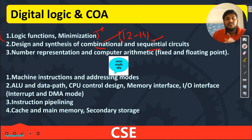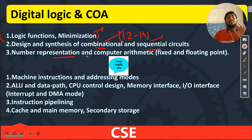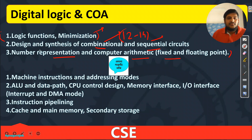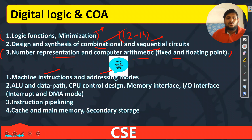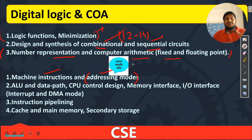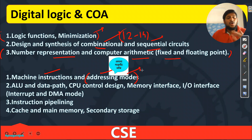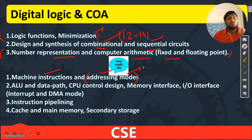For sequential circuits: start with basics, then all counter types — compulsory. Then Number Representation: computer arithmetic, fixed point and floating point — also important. Then COA: Machine Instructions and Addressing Modes — very important. Last time this was asked in our mini test. Study addressing modes in very much detail. In our test series all theory will be available.